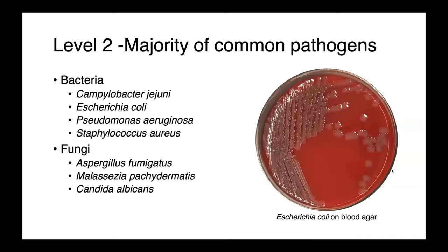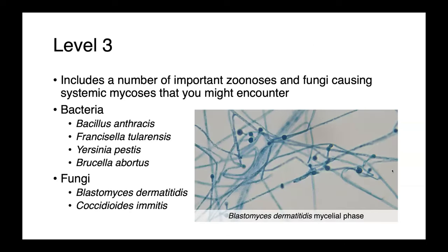As far as fungi go, Aspergillus fumigatus, Malassezia pachydermatis, and Candida albicans are all species commonly encountered in veterinary medicine that would be described as level two. Level three includes a number of really important, potentially zoonotic organisms and fungi which cause systemic mycoses. Bacteria such as Bacillus anthracis (the cause of anthrax), Francisella tularensis (the cause of tularemia), Yersinia pestis (the agent of plague), and Brucella abortus would all be level three bacteria.